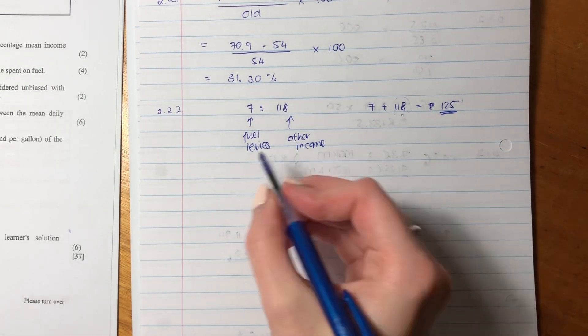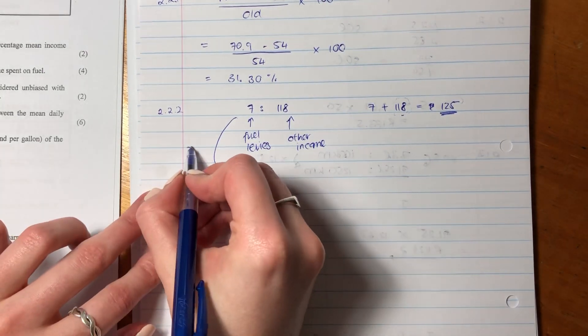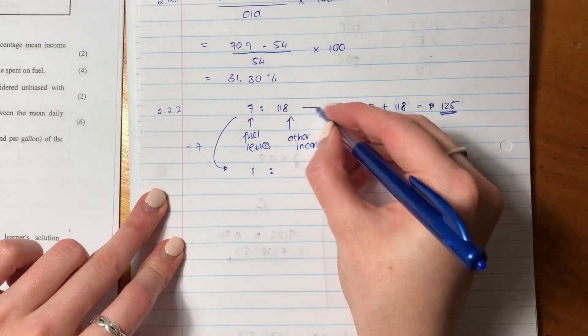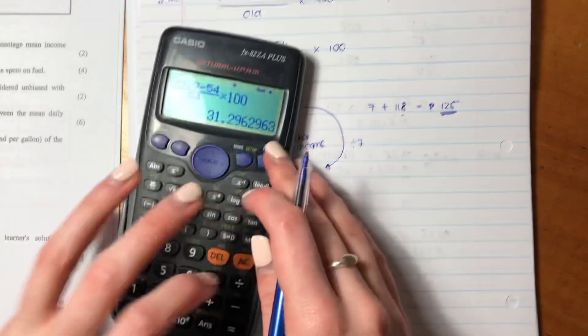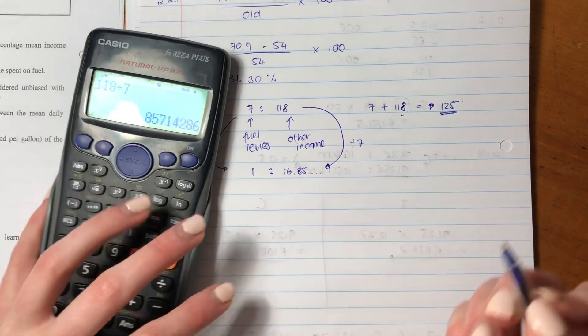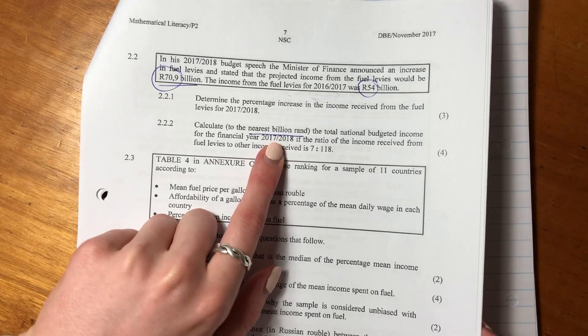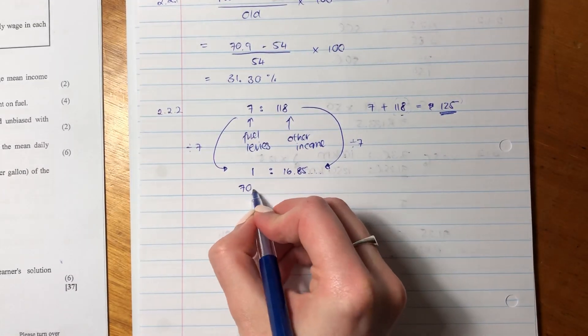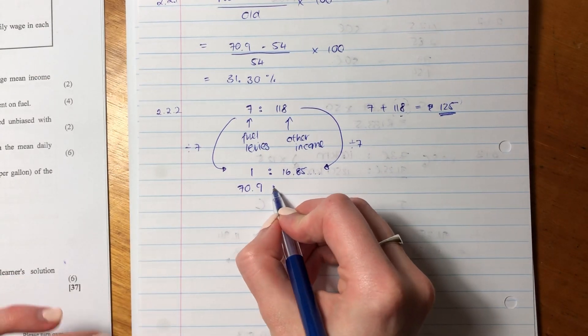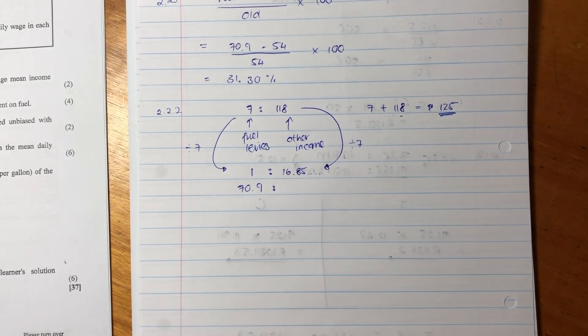That 125 is our total because that's our fuel levy, and that is our other income. Now, what I'm going to do here is I'm going to convert this ratio into a ratio of 1 to something. The reason I do that is it just makes it a little bit easier. So if we divide that side by 7 to get to 1, we have to divide that side by 7. It's probably going to give us a decimal, but we don't have to stress about that. Just keep it in your calculator, 16.85.